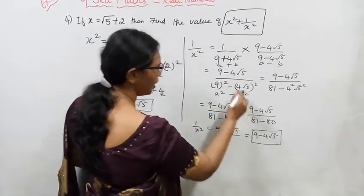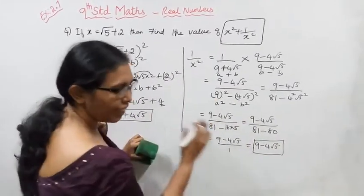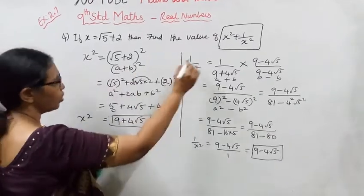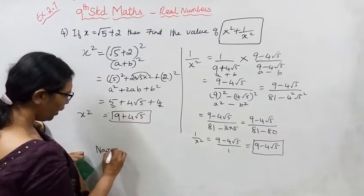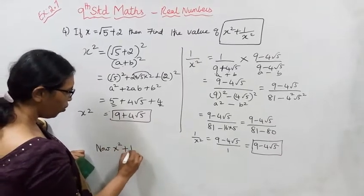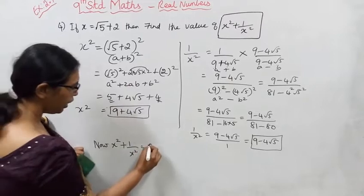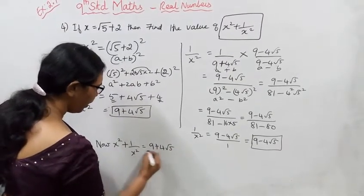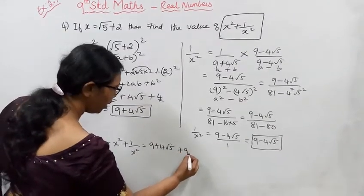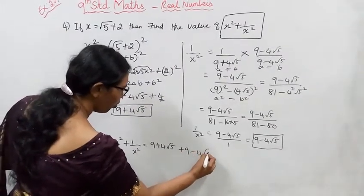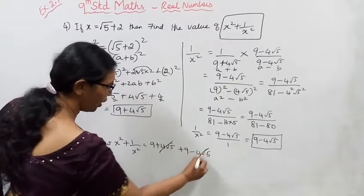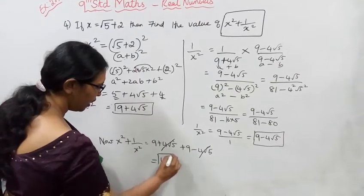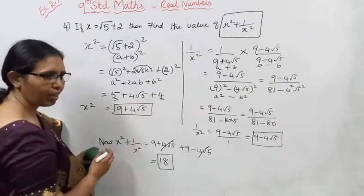So 1/x² = 9 - 4√5. Now adding: x² + 1/x² = (9 + 4√5) + (9 - 4√5). The 4√5 terms cancel, leaving 9 + 9 = 18. The answer is 18.